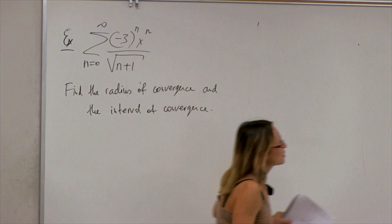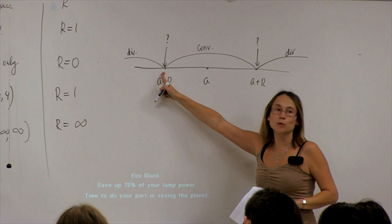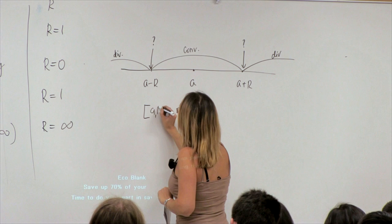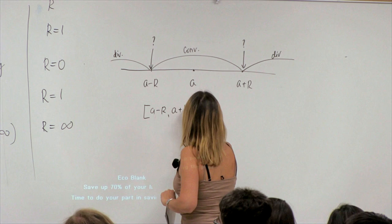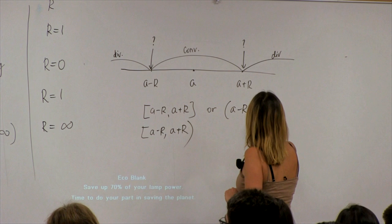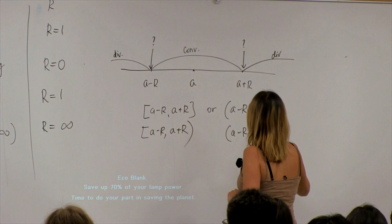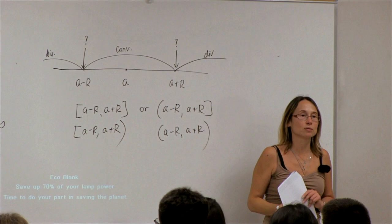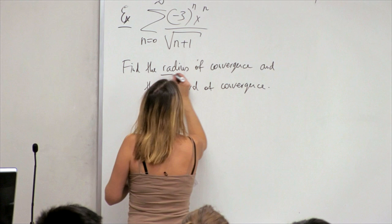What's the difference? The radius of convergence tells me the interval, but it's not clear what the endpoints do. It could converge on [a−r, a+r], or (a−r, a+r), or mixed open/closed. So we have four possibilities depending on whether the endpoints converge. That is why we need to find both the radius and the interval of convergence.